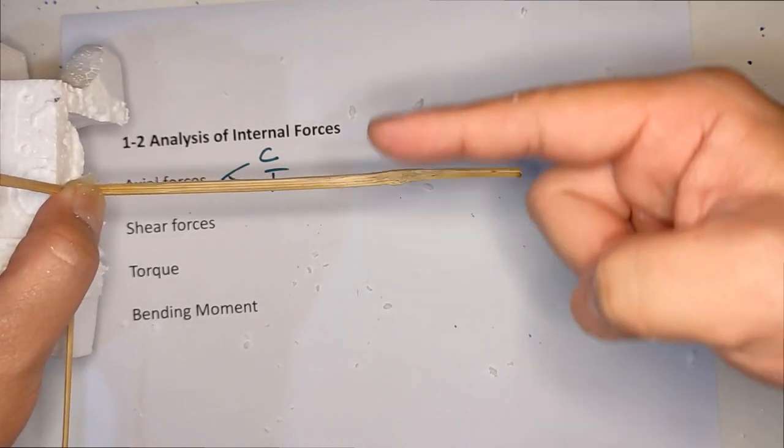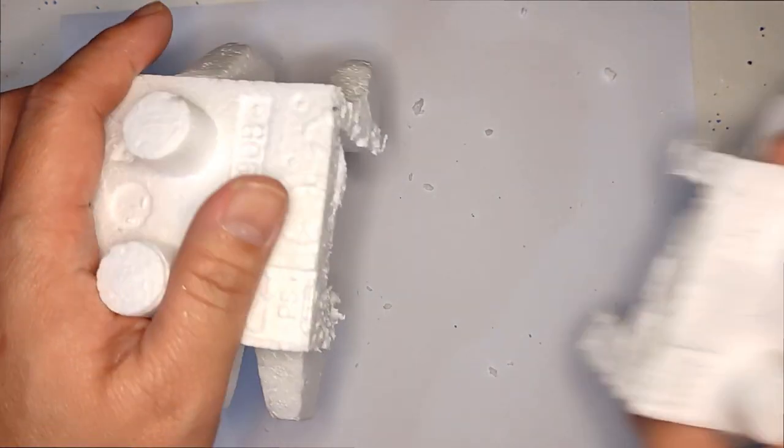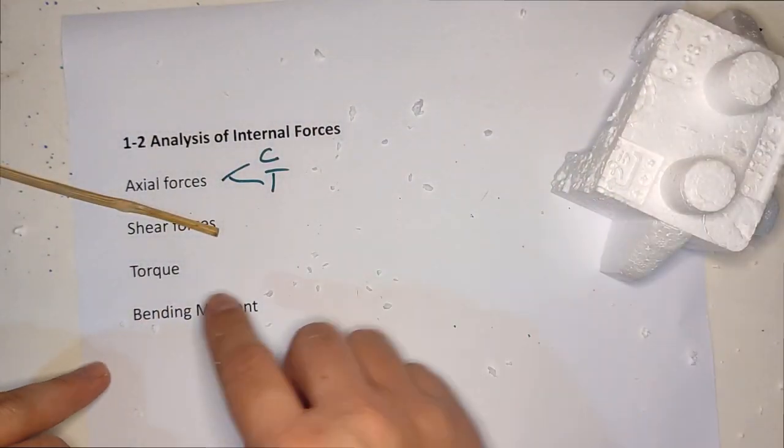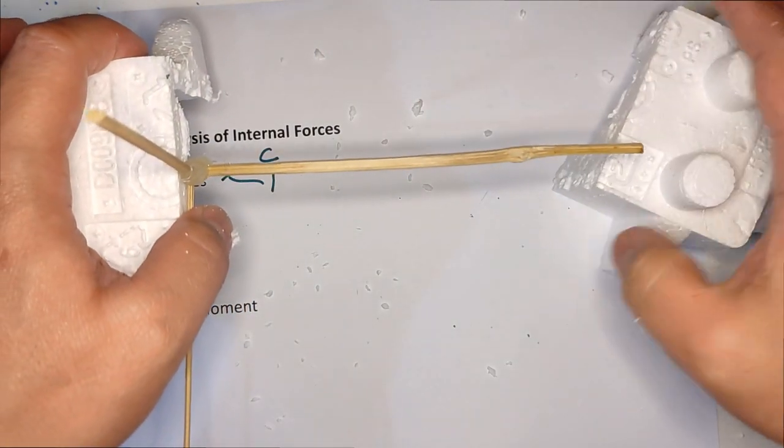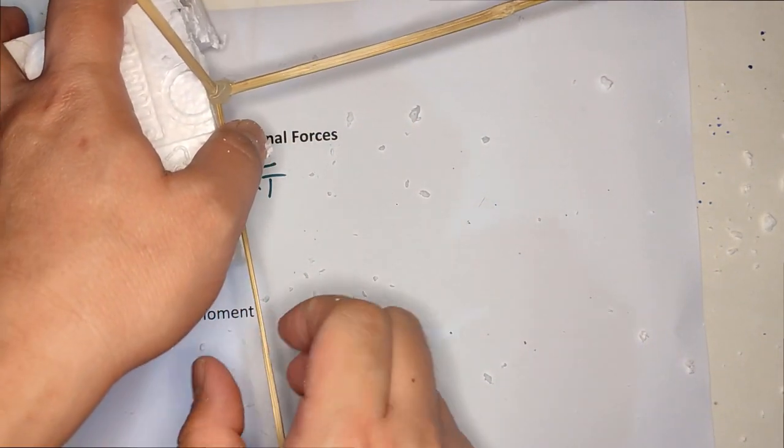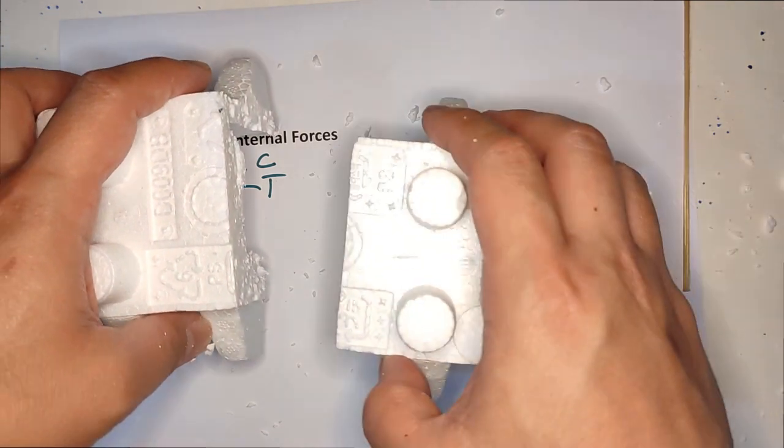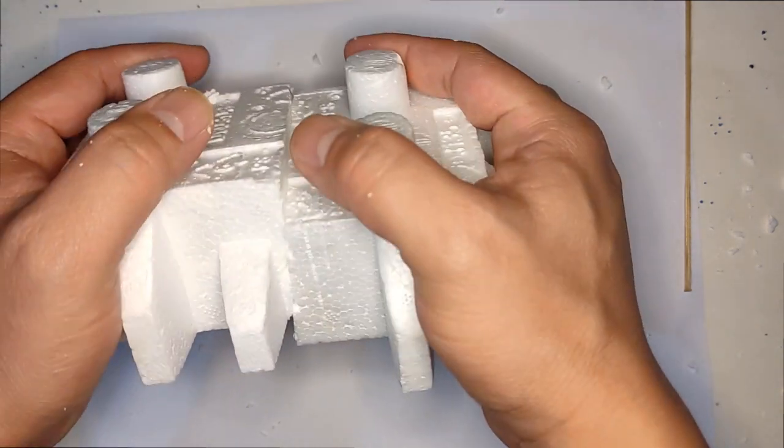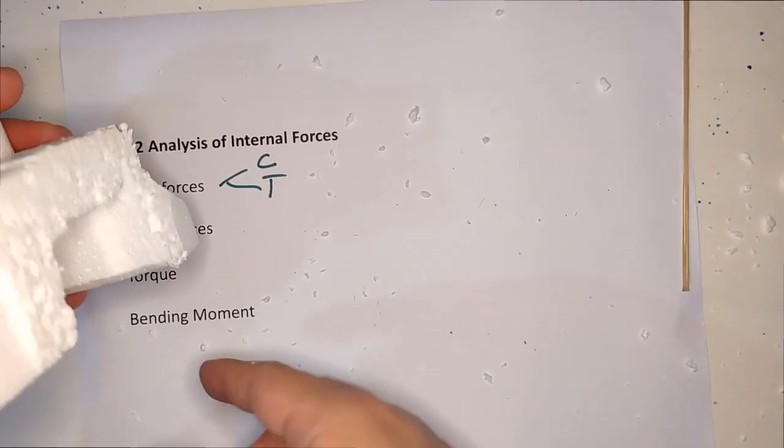So those are the forces - three of them. But we haven't discussed the effect of the couple or the moment here, either like this or like that. What does it mean? It's twisting it. Twist, meaning torque or moment.